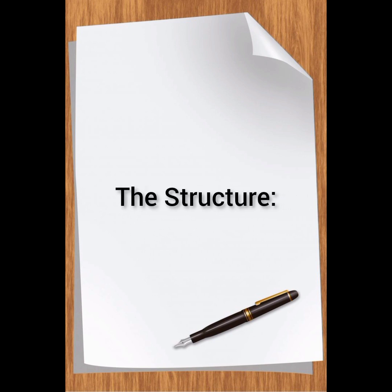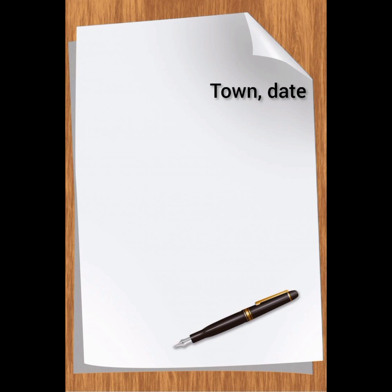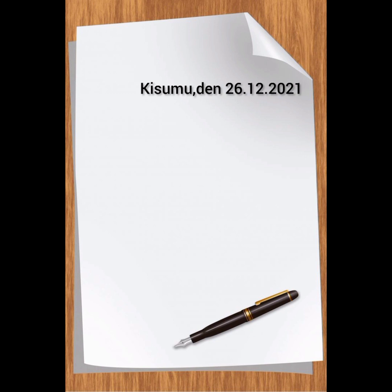Now, the format: the first thing you need to pay attention to is that letters begin with the date. You write the town in which you are, and this is written away from the margin — on your right-hand side. For example, the town I'm in is Kisumu: 'Kisumu,' then a comma, and then the date. So for example: Kisumu, 26th December 2021.